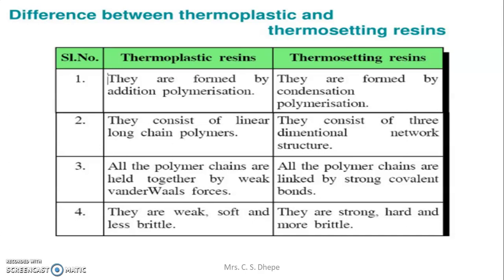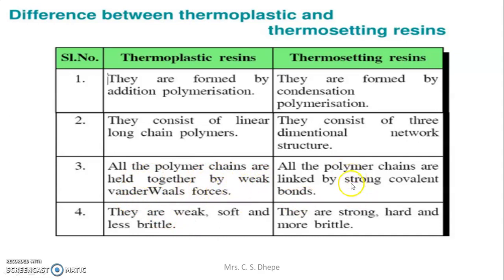Let us see the difference between thermosoftening plastic and thermosetting plastic. Thermosoftening is also called thermoplastic. First, thermoplastics are formed by addition polymerization, whereas thermosetting plastics are formed by condensation polymerization. Thermoplastics consist of a linear chain structure, whereas thermosetting plastics have a cross-link, three-dimensional network-like structure. In thermoplastics, polymer chains are held by weak van der Waals forces, whereas in thermosetting they are linked by strong covalent bonds.